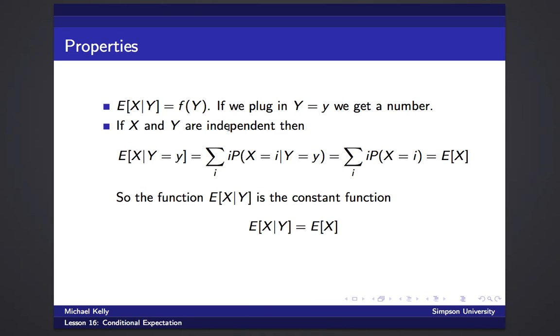So what about if x and y are independent? Well, in that case, given y equals little y, we plug in this sum for the expected value of x, and the probability that x equals i given y equals little y is just the probability x equals i. Because with independence, we have no information, and so that just gives us the expected value of x.